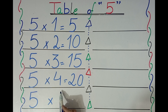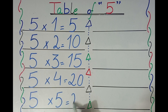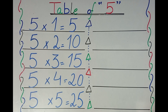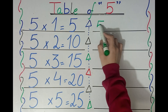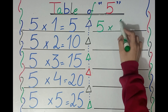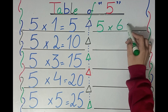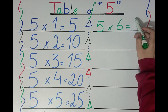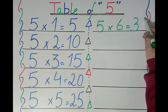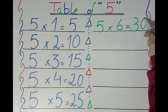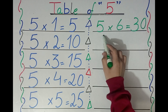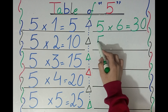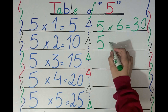Five fives are twenty-five. Five fives are twenty-five. Five sixes are thirty. Five sixes are thirty.